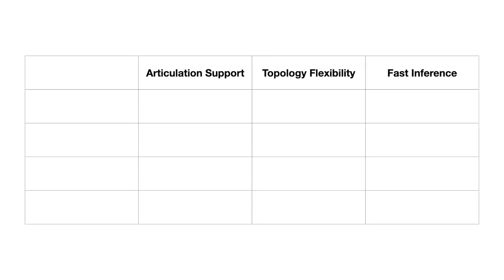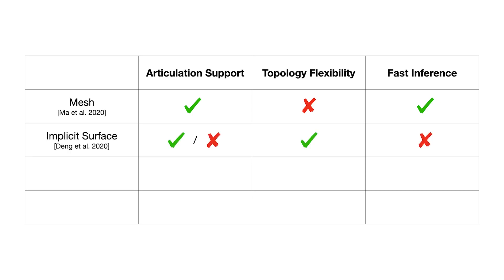However, none of the existing 3D representations can satisfy these requirements. 3D meshes are fast at inference but are not flexible with varying topology, and they require surface registration as a data preparation step. Implicit surfaces can represent various topologies with details, but inference is typically time-consuming. At the middle ground, representing shapes with deformable surface elements is promising — this approach is locally coherent and can deal with varied topology. However, existing approaches are either limited in expressiveness or generalization ability.